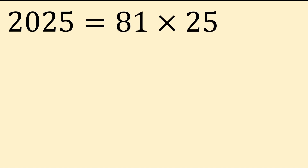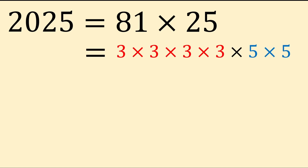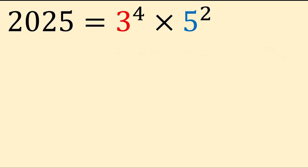First up, let's prime factorise 2025 to uncover a special power. One factor of 2025 is 25, and we need 81 lots of it to make 2025, which is 81 times 25. We can split 81 into 4 lots of 3s and 25 into 2 lots of 5s. As both 3 and 5 are primes, we can stop here: 3 × 3 × 3 × 3 × 5 × 5 = 2025. Bunching up our four 3s and two 5s, we can write 2025 concisely as 3⁴ × 5².